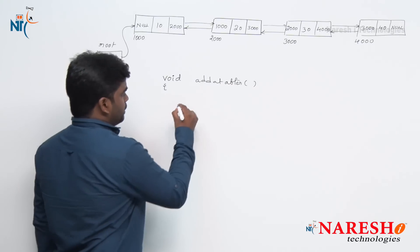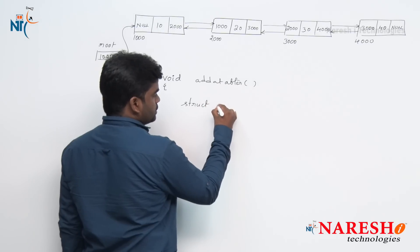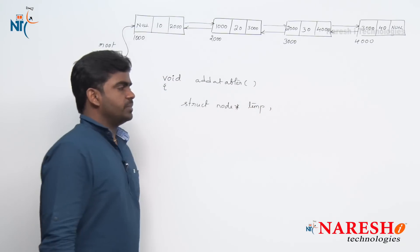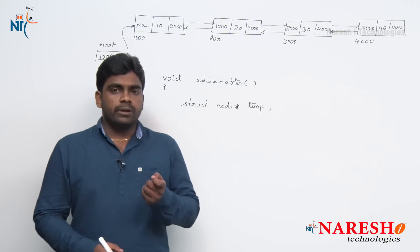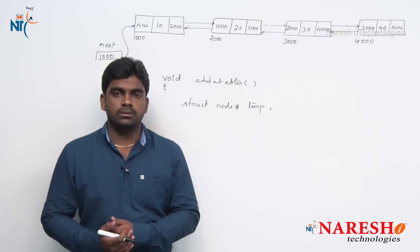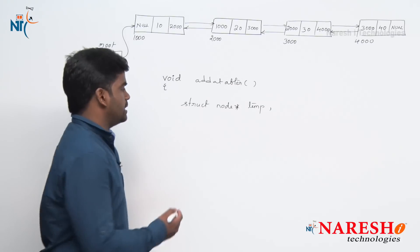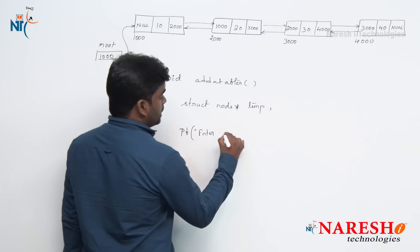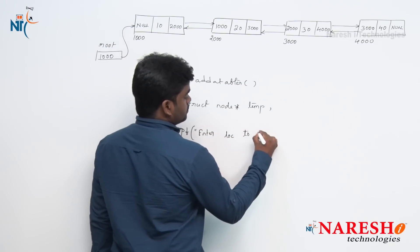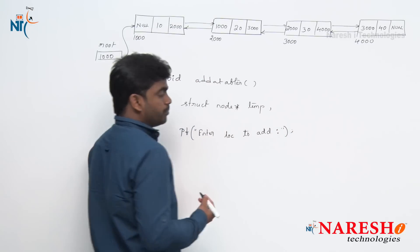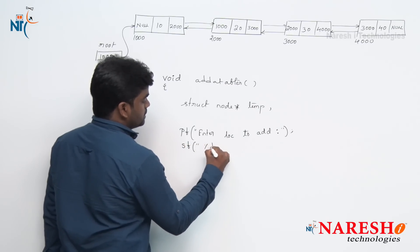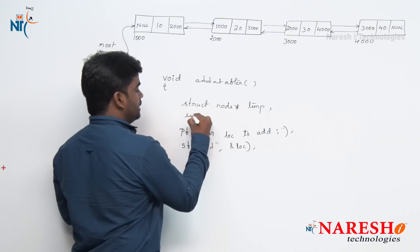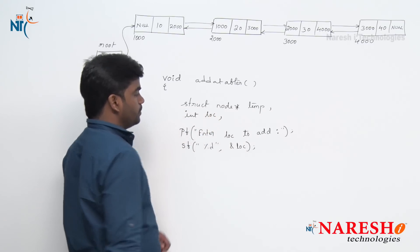First of all, to perform all the temporary operations, we are declaring a temporary variable: struct node *temp. Now, first we need to check where we need to add the new node — the location we need to read. So here we are asking: printf("Enter location to add the new node"). They will input, so scanf("%d", &loc) — collecting input into a variable called loc.